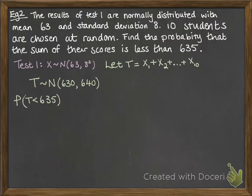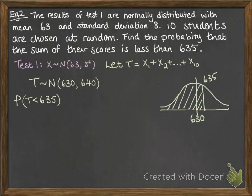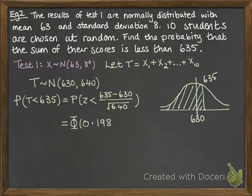Then we want the probability that the total is less than 635. So it's going to look like this. So that's the probability that Z is less than 0.198. So that gives us 0.5785.